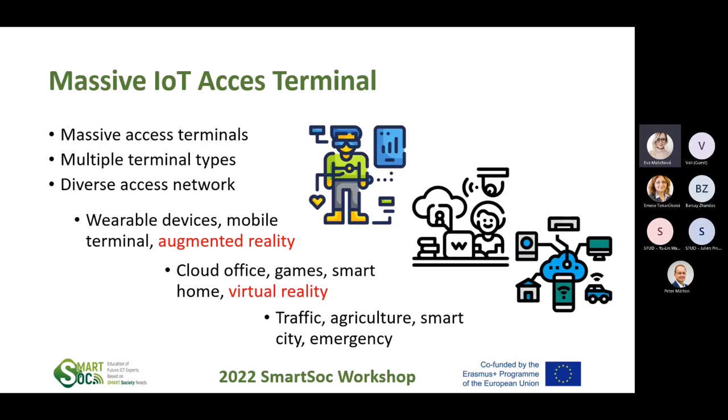The deployment of the fifth generation includes massive IoT access terminals and multi-terminal types — both in the city and out of the city. You can wear devices; many of you have smartwatches that detect heart rate. Even if you have diabetes, you can measure your blood sugar if it's connected to your blood flow. You can also employ cloud-based games on the same smartphone through network neutrality traffic. We can access a lot of services with the massive IoT access terminal.